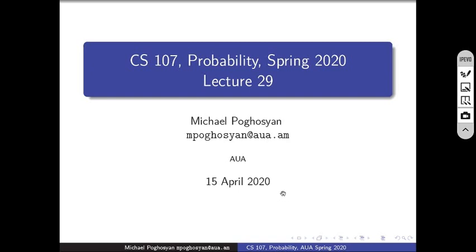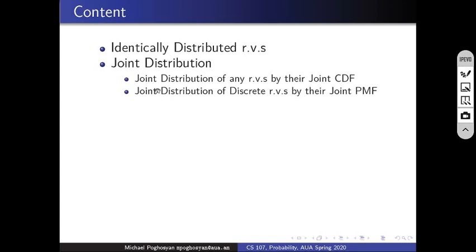Hello everybody, this is Mikhail Pohosian from AUA with ProBeauty lecture number 29. Today we're going to talk about identically distributed random variables and joint distribution. In particular, we'll talk about how to describe joint distributions using joint CDFs, then discrete joint distributions, and describing the distribution of discrete random vectors through their joint PMF.